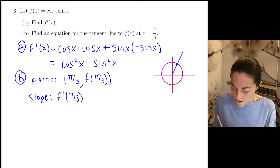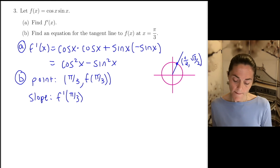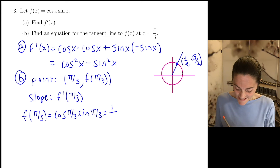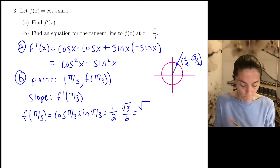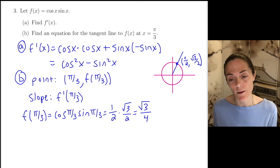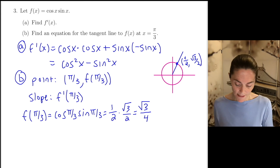The point on my unit circle at pi over 3 — the sine is bigger than the cosine, so it's 1/2 comma square root of 3 over 2. f of pi over 3 is cosine(π/3) times sine(π/3). This is 1/2 times the square root of 3 over 2, so we get square root of 3 over 4. When you see something like this on a quiz, you want to leave numbers like this as you find them — don't type this in your calculator and get a decimal approximation.